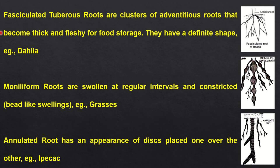Next we will come to fasciculated tuberous roots. They are found in a cluster at the base of the stem and they become thick and fleshy for food storage. One striking point here is that they have got a definite shape. Fasciculated roots are found in dahlia.